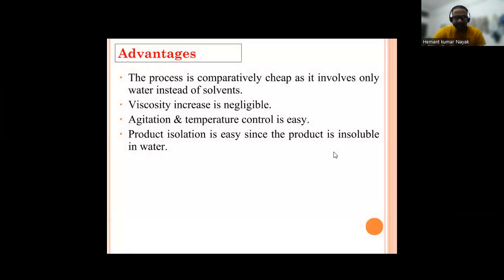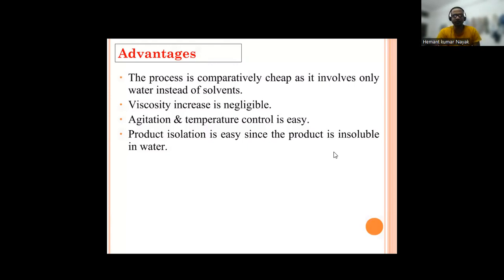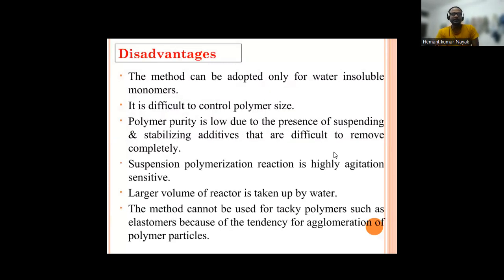Advantages of suspension polymerization: the process is comparatively cheap as it involves only water instead of a costly solvent. There is no problem of viscosity increase. Agitation and temperature control is easy. Product isolation is easy since the product is insoluble in water.